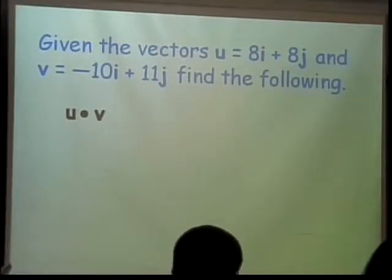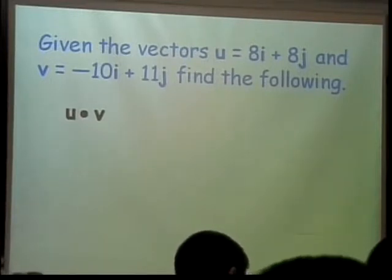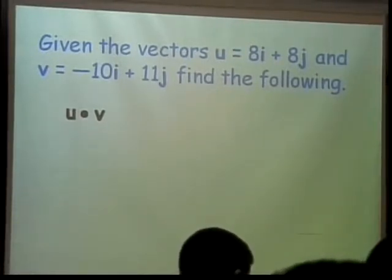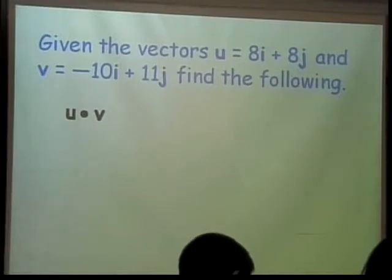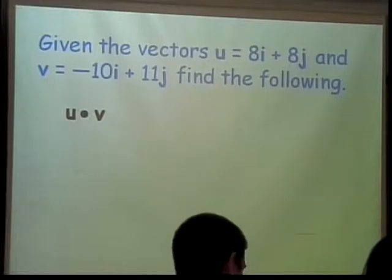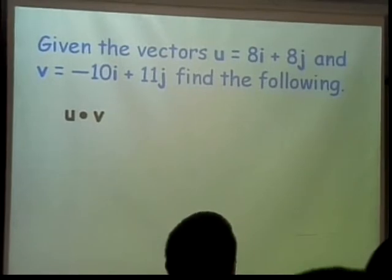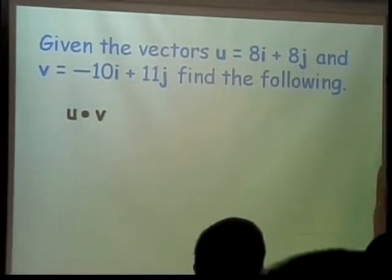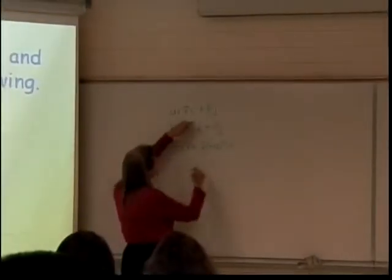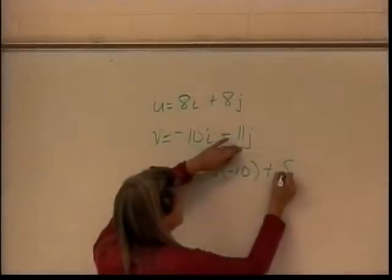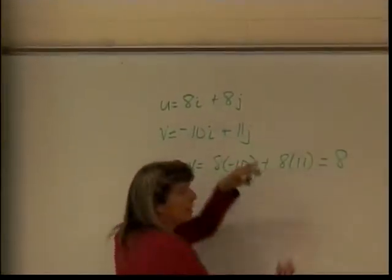So here we have u is 8i plus 8j, and v is negative 10i plus 11j. We took 8 and multiplied it times negative 10, and added that with 8 times 11, and it turns out to be 8.